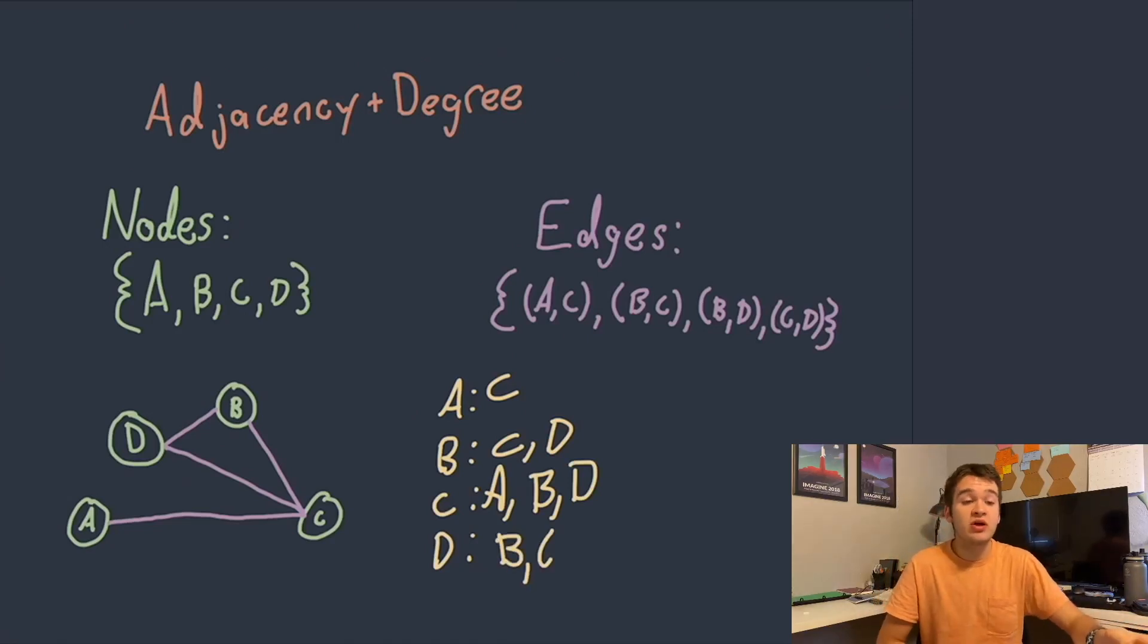So once we understand that we can then move on to the idea of degree. So degree is simply going to be how many different nodes are adjacent to whatever given node you are. So the degree of A in this example is going to be 1 because it only has a connection to C. The degree of B is going to be 2 because it's connected to C and D. The degree of C is going to be 3 because it's connected to A, B, and D. And the degree of D is also going to be 2 because it is connected to B and C.